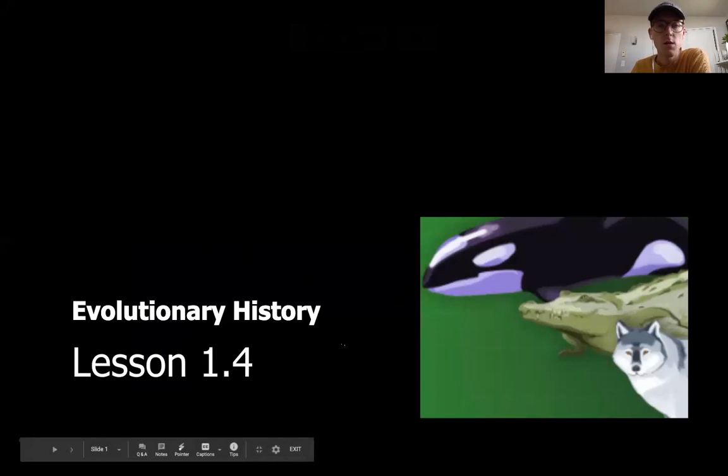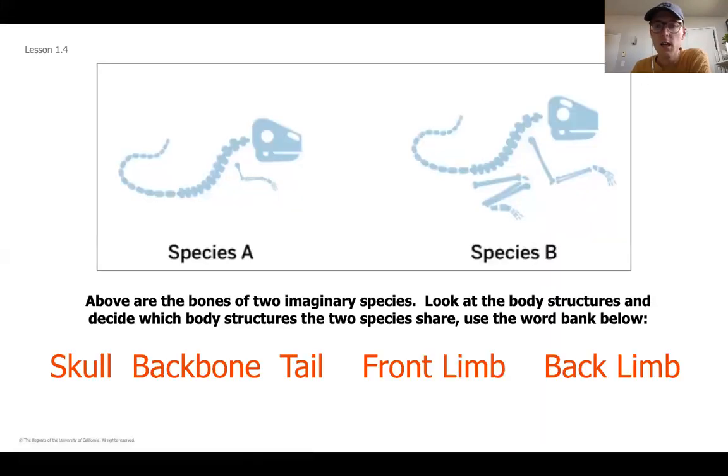We're going to jump right in today, taking a look at a couple of fossils here. We've got species A and species B. They're both imaginary species, but I want you to look at the body structure. We've been starting to talk about why body structure is important for evolutionary scientists.